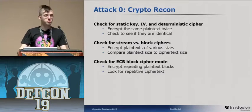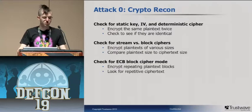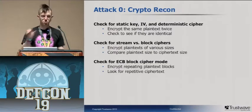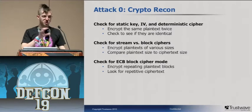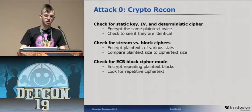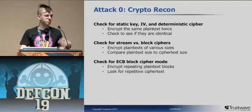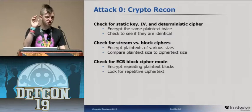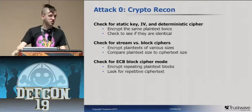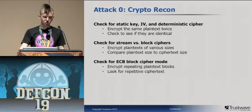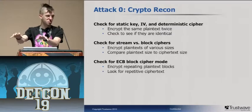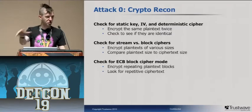You can also check for ECB block mode. Unlike CBC, in ECB each block is independent and encrypted independently. So if you have repetitive plaintext — like eight uppercase A's, eight uppercase B's, eight uppercase A's, eight uppercase B's — your ciphertext will have blocks one and three being identical, and blocks two and four being identical. You can see those patterns and you can then take those blocks and rearrange them however you like.